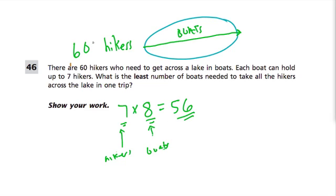But I need to take across 60 people. 9 boats, each with 7 hikers, would give me 63 people that are going across at once.